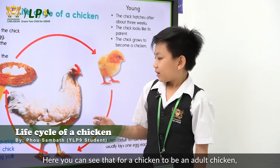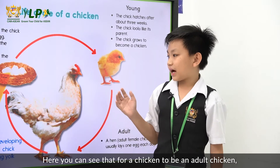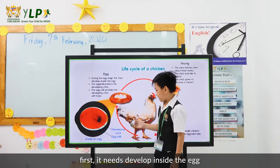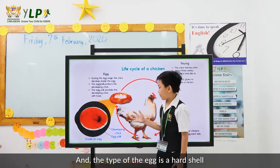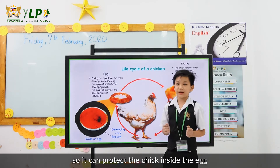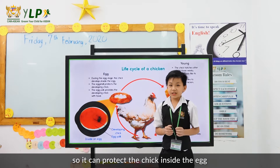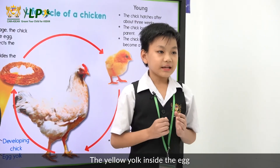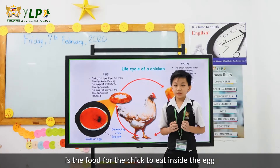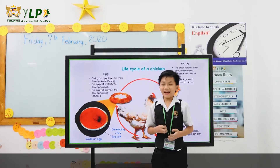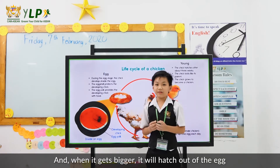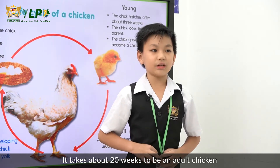Here you can see that for a chicken to become an adult chicken, first it needs to develop inside the egg. The egg has a hard shell to protect the chick inside. The yellow yolk inside the egg is the food for the chick, and when it gets bigger, it will hatch out of the egg. It takes 20 weeks to become an adult chicken.